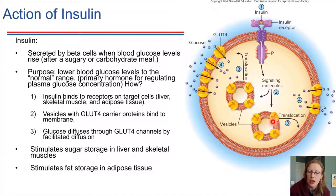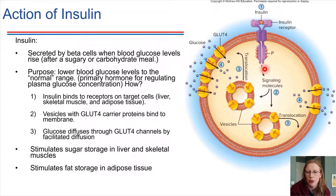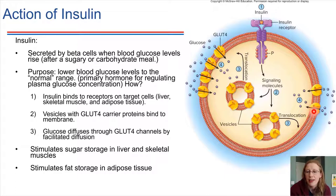Inside the cell there are vesicles holding onto GLUT4 carrier proteins. These vesicles are ready to go. The second messenger system will cause these vesicles to fuse with the plasma membrane. That fusion inserts the GLUT4 carrier proteins into the plasma membrane, which then allows facilitated diffusion of glucose into the cell.